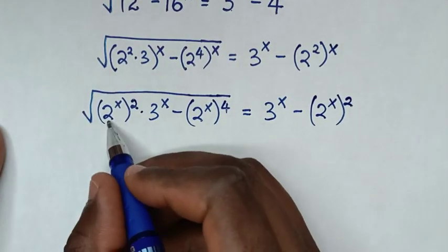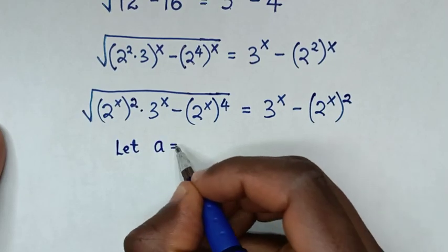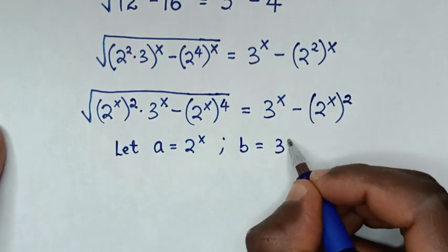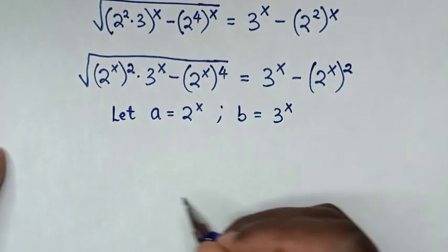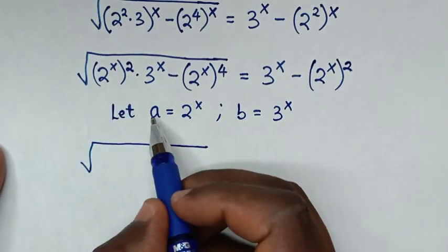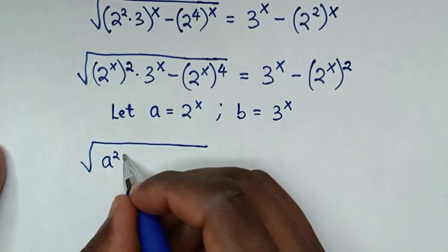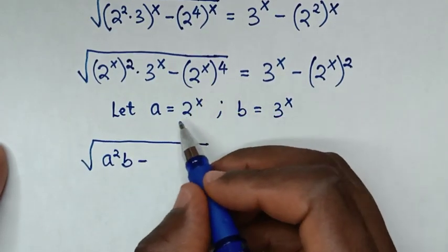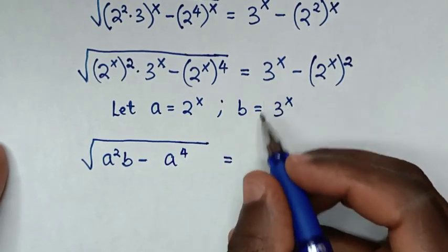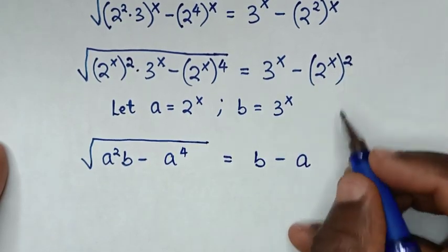In the next step, 2^x is common throughout, so we let a = 2^x and b = 3^x. Our equation becomes: square root of (a² × b minus a⁴) is equal to b minus a².